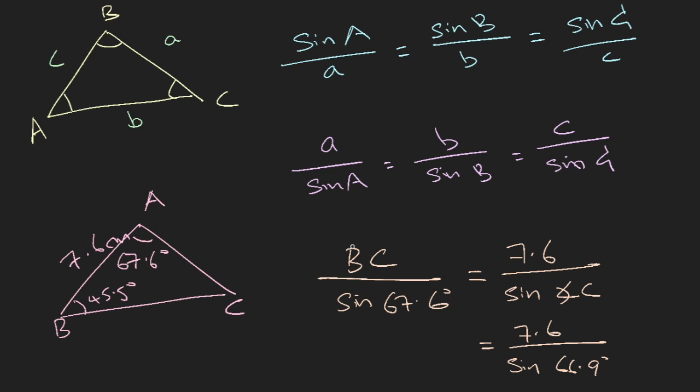180 minus 67.6 minus 45.5 will give you 66.9. So you have this equation, and it is really a simple method to find BC. So now BC would be equals to, just multiply this over to the other side, sine 67.6 degrees multiply by 7.6 over sine of 66.9 degrees, and your answer will be 7.64 cm.